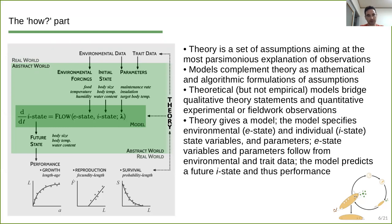So let's go through this scheme and try to locate where theory comes in. Theory is a set of assumptions that aim at the most parsimonious explanation of observations, and models actually complement theory. So we have theory as a set of assumptions, and then we turn these assumptions into basically equations of mathematical formulation or possibly algorithms. We are turning assumptions, theoretical assumptions, into mathematical equations or possibly algorithms. So these theoretical models, as opposed to empirical like statistical models, really bridge qualitative theoretical statements, essentially assumptions, possibly some stylized facts into quantitative experimental and fieldwork observations, essentially environmental data or trait data.